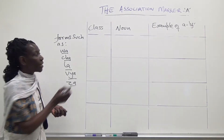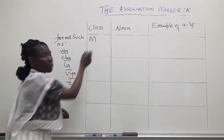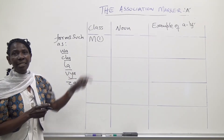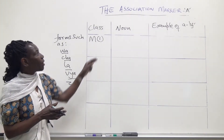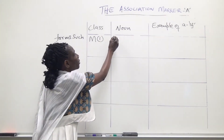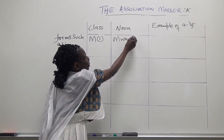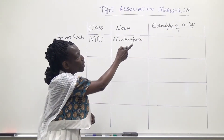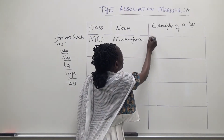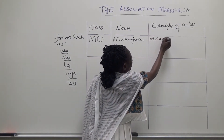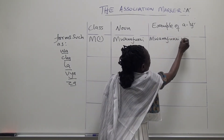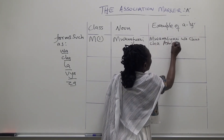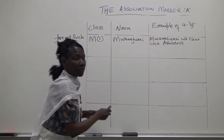The first noun class we are going to consider is the Mu noun class, which is actually the first noun class in Swahili. This is a noun class that deals predominantly with animate things. An example of a noun in this class is the word 'mwanafunzi', which translates into English as 'student'. In a sentence, we say 'mwanafunzi wa chuo cha Amherst'.